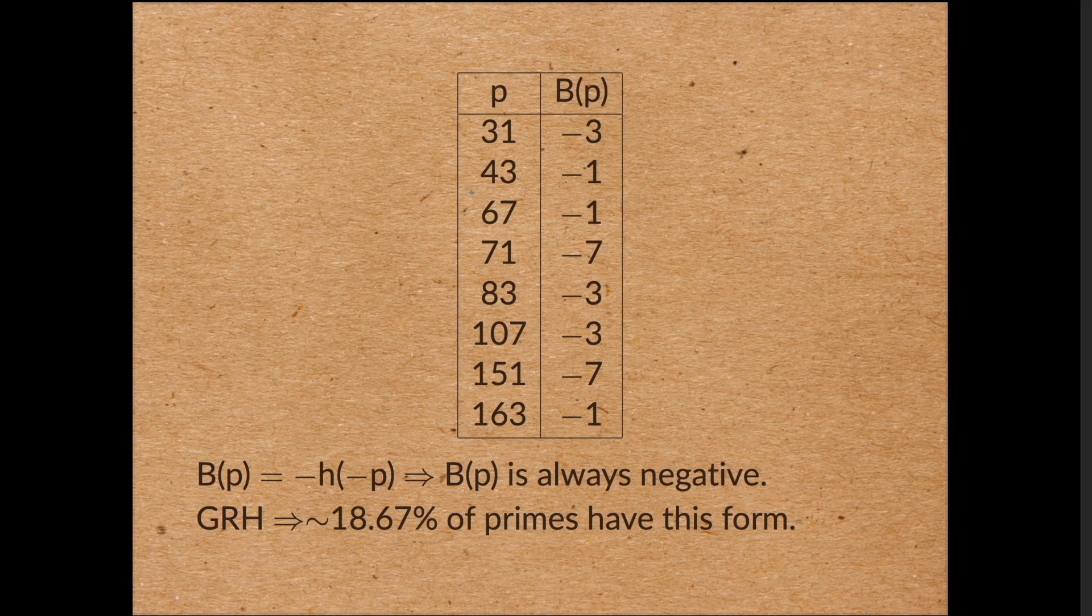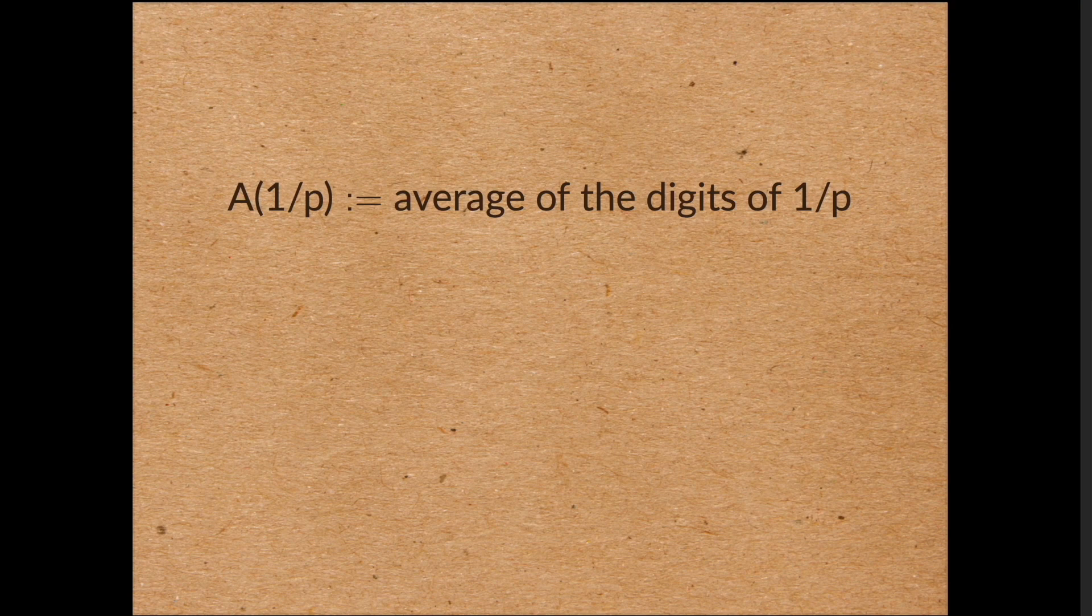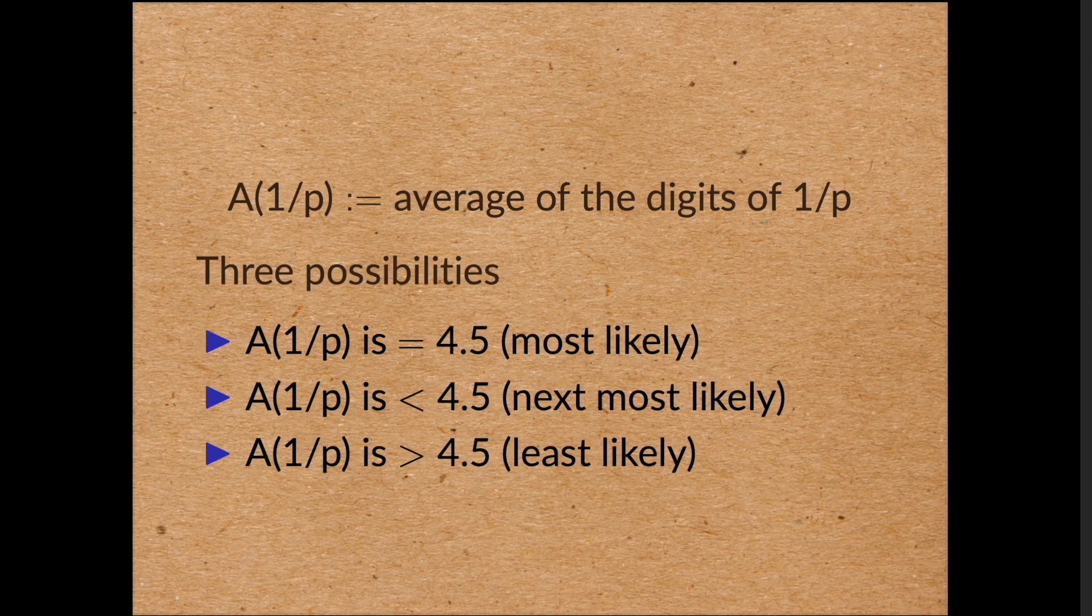Now it also turns out to be true that a positive proportion of primes have average digit of 1 on p strictly bigger than 4.5. It's just that this proportion is smaller than the corresponding proportion whose average is less than 4.5. So this completely answers the question we had at the beginning, as long as we're happy to assume the generalized Riemann hypothesis. So the most likely scenario is that the average digit of 1 on p is exactly 4.5. The next most likely is that the average is less than 4.5, and the least likely is that the average is strictly bigger than 4.5.